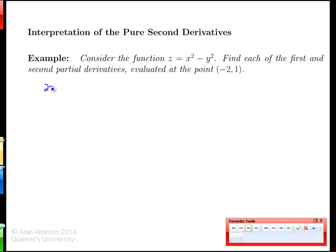So to do that, we find the first order derivatives first. We need those before we can calculate the second order derivatives. With respect to x, that's 2x. With respect to y, it's negative 2y.